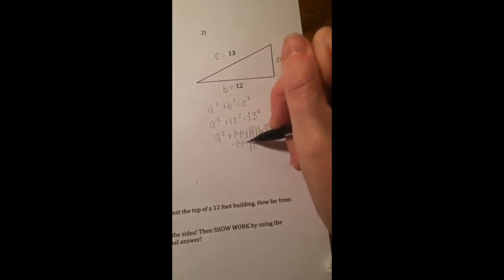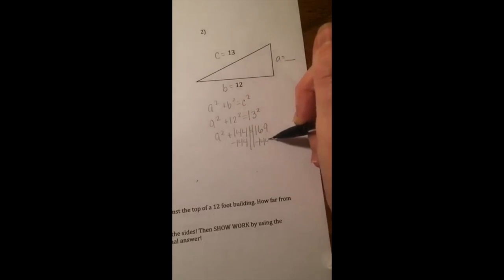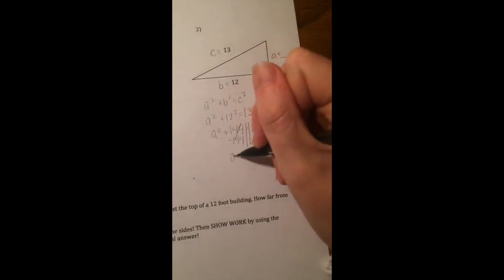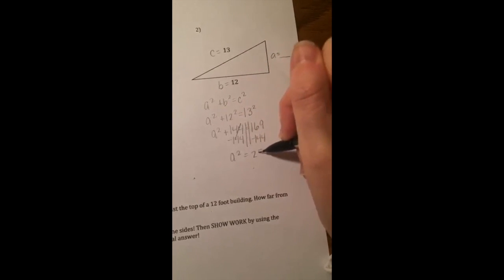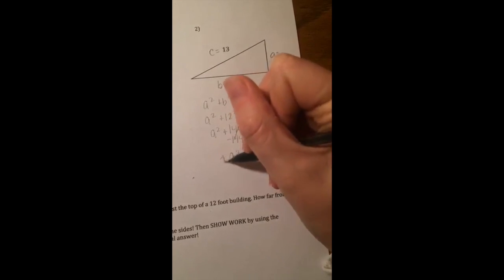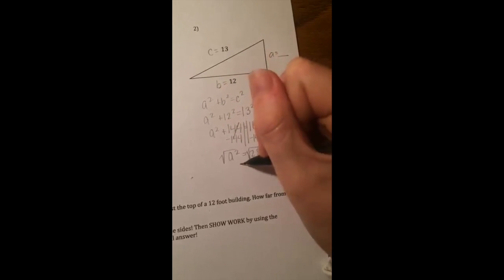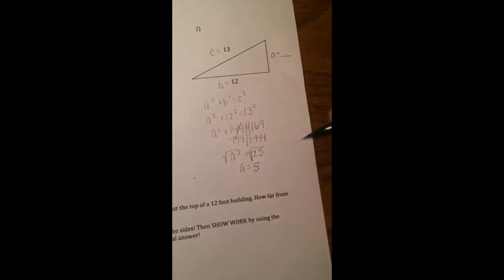Subtract 144 from both sides. You end up with A squared equals 25. To undo a square, take the square root of both sides, and you can see that our A value is 5.